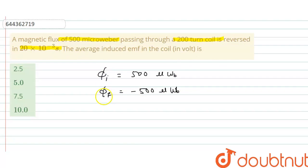So now change in magnetic flux is, the magnitude of change in magnetic flux we can write as 1000 microweber.